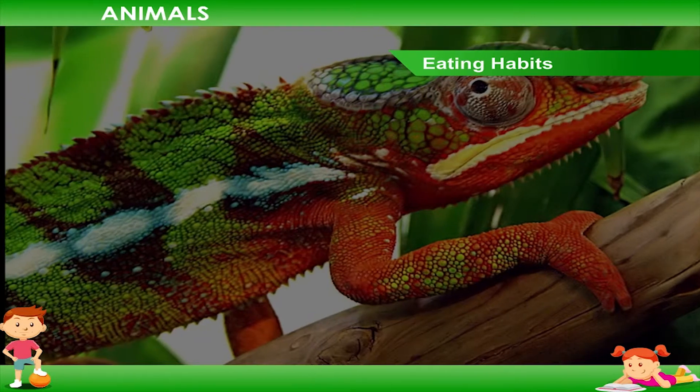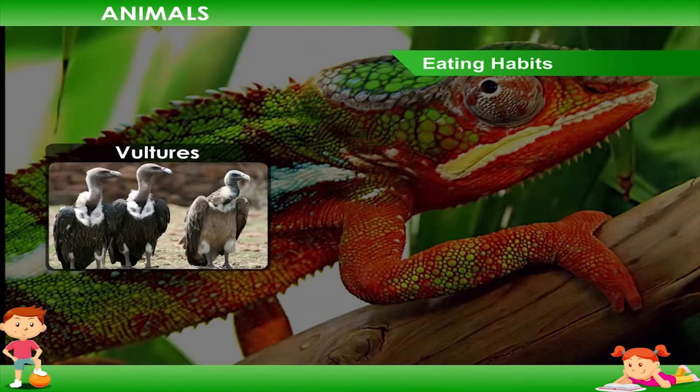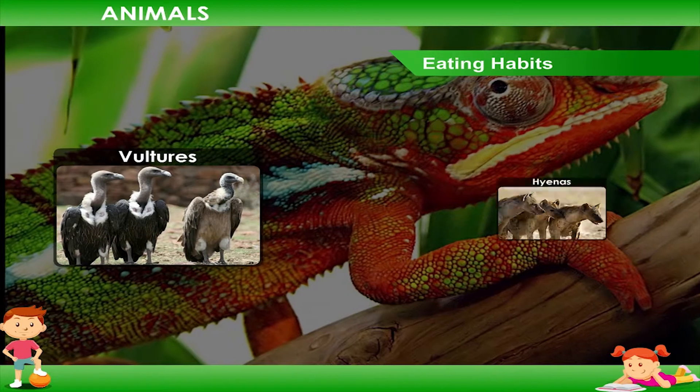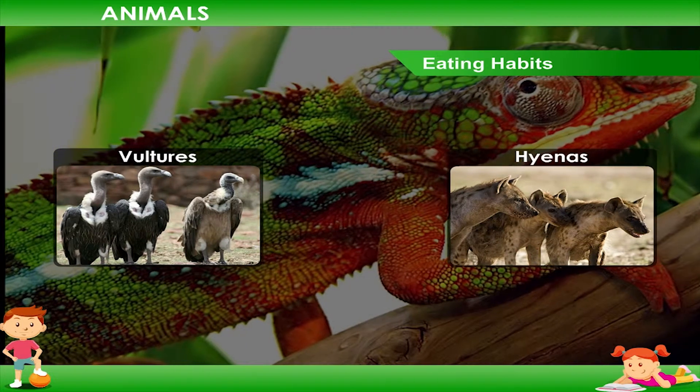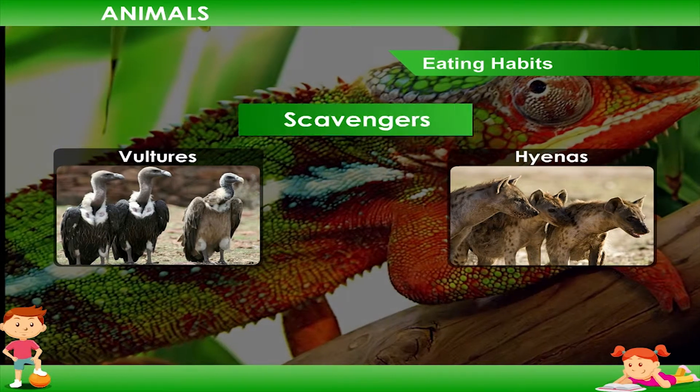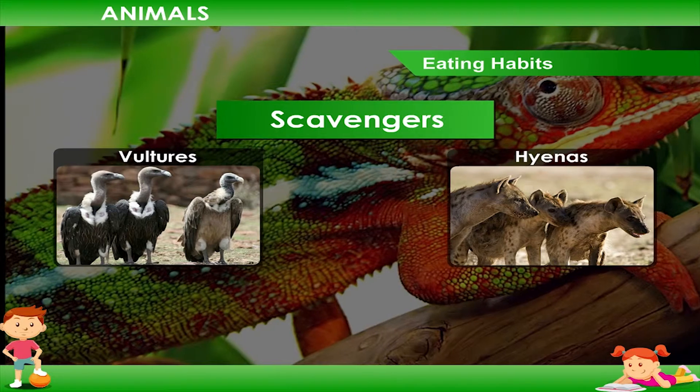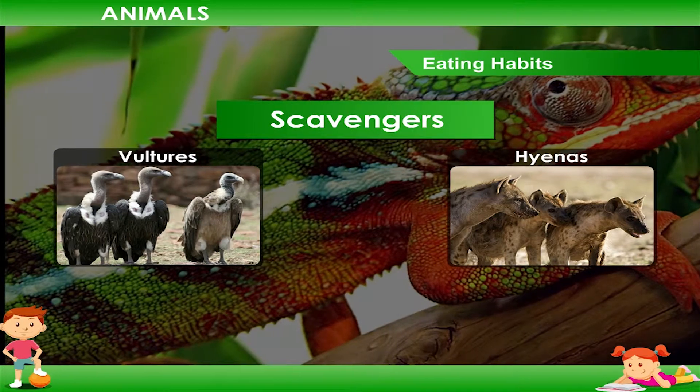Some animals such as vultures and hyenas eat the flesh of dead animals. These are called scavengers.